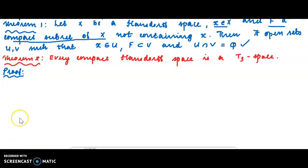My students, our next theorem of this semester, Theorem 2: Every compact Hausdorff space is a T3 space. This is also an application of our first theorem. Even a Hausdorff space, its point and a compact subset not containing the point are separable. X element of V, the subset of V and U intersection V equals empty set.